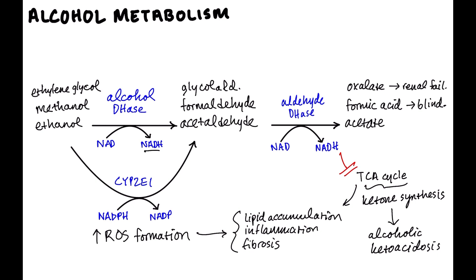There are also products from glycolaldehyde and ethylene glycol that get into the blood and cause cerebral edema. Oxalate itself and formic acid are acidic, so when they're in the blood it causes an anion gap metabolic acidosis. Remember your MUDPILES mnemonic — methanol and ethylene glycol can cause anion gap metabolic acidosis.